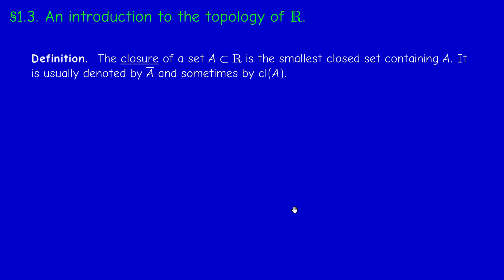Now when we talked about open sets, we talked about the interiors, the interior of a set. Now there's also the notion of closure. By definition, the closure of a set A is the smallest closed set containing A. It is usually denoted by A̅ and sometimes by cl(A). The elements of A̅ are called the adherent points of A, or the closure points of A, or the contact points of A.